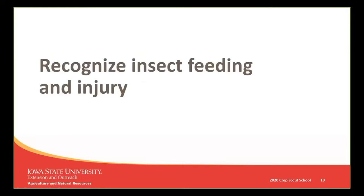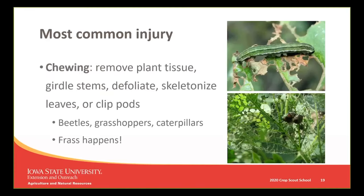Now we transition to recognizing injury — important because sometimes you don't see the pest when scouting. The most common injury type comes from chewing mouthparts and is obvious even at low densities: pieces of tissue are missing. Insects can remove plant tissue, girdle stems, clip pods or silks, and even prune back roots. Beetles, grasshoppers, and caterpillars are most common. Because they eat solid food, they also produce frass — which can look like pellets, sawdust, or oatmeal.